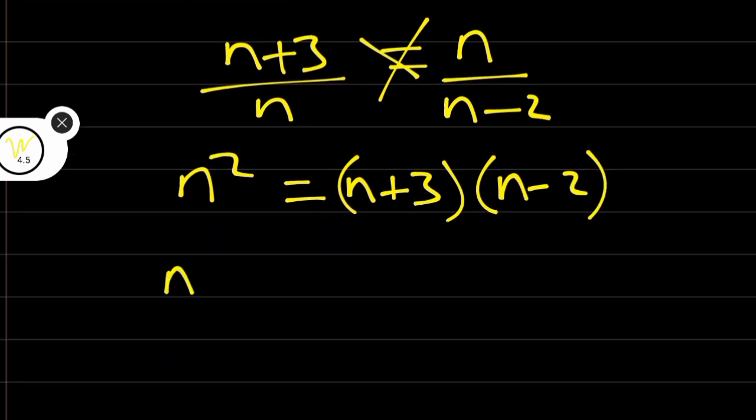Let's open the brackets. We have n squared is equal to n into bracket n minus 2 plus 3 into bracket n minus 2.